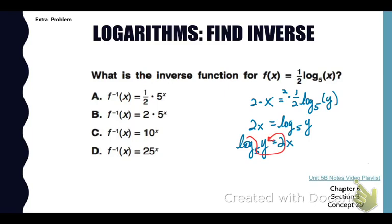because then it's easy to switch it into exponential form. So that will be 5 to the 2x power equals y. Inverse function of x equals 5 to the 2x. Or I can break out that 5 to the 2, or the second power, as 25. So the choice we're looking for is d.